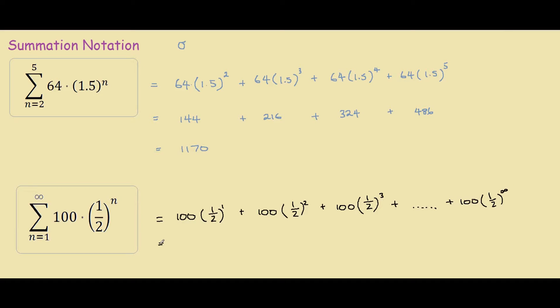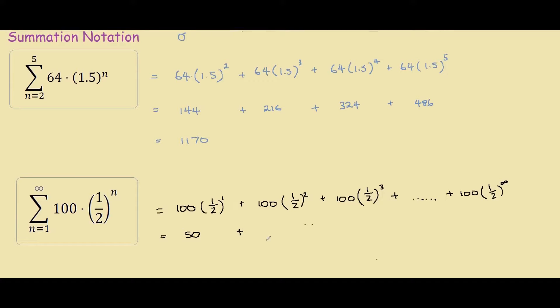So how do we evaluate a series that involves infinity? Well, first our first term is 50. 100 times one-fourth is 25. 100 times one-eighth is 12.5, and so on until you get 100 times a really small number, which is 0.